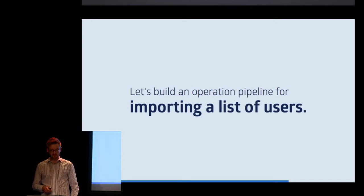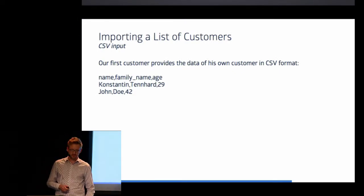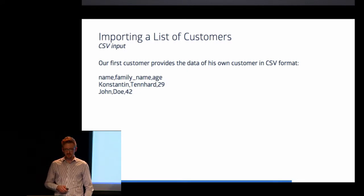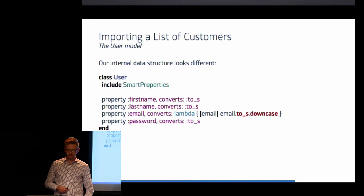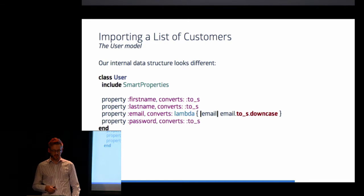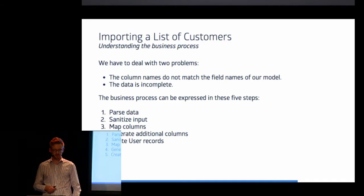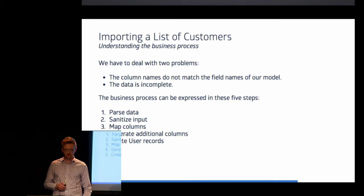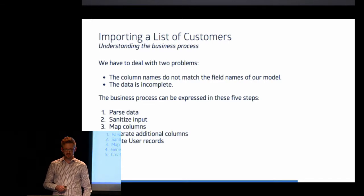And I want to show you a real-world example for operation pipelining. And I want to talk about importing a list of users. Again, let's assume our customer comes to us and wants to import users in CSV data. And he provides us with a CSV data file that contains three columns, name, family, name and age. But our user model looks different. Because internally, we use the identifier's first name and last name. And we require an email as well as a password. So in order to import this data, we actually need to solve five steps. We need to first parse the CSV, which is pretty straightforward with Ruby. We then need to synchronize the input just to be on the safe side. And then we need to map columns and generate, if possible, data for the missing columns. And finally, instantiate the user records.